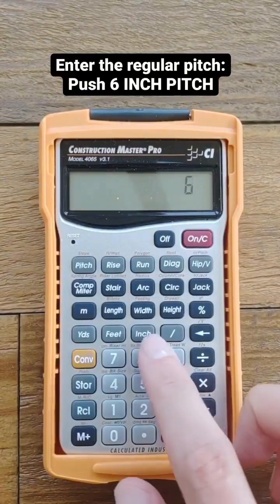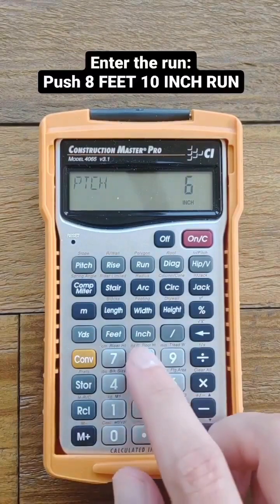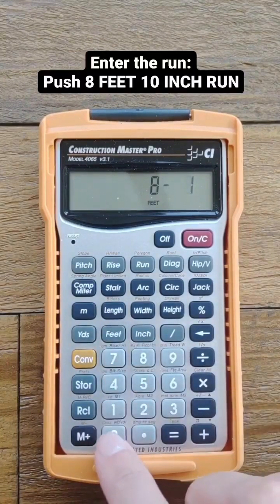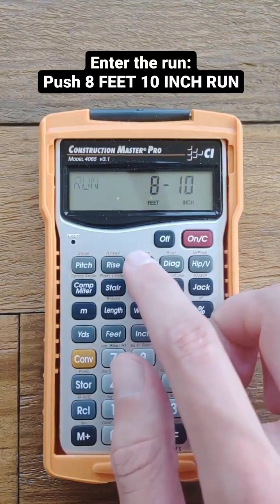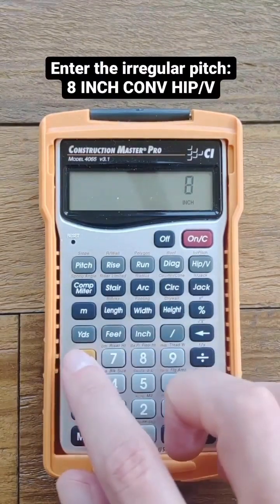First, we enter the regular pitch just like this. Then we enter our run, followed by the irregular pitch.